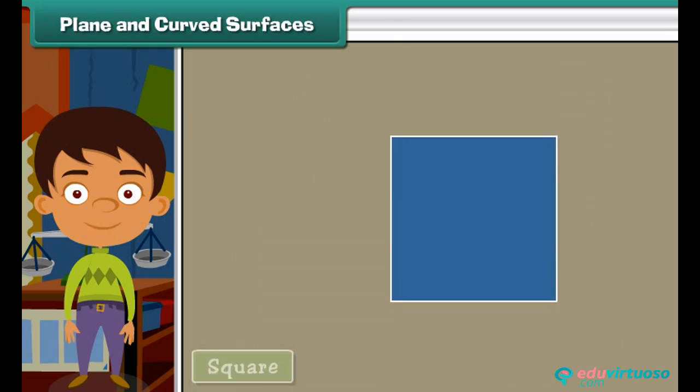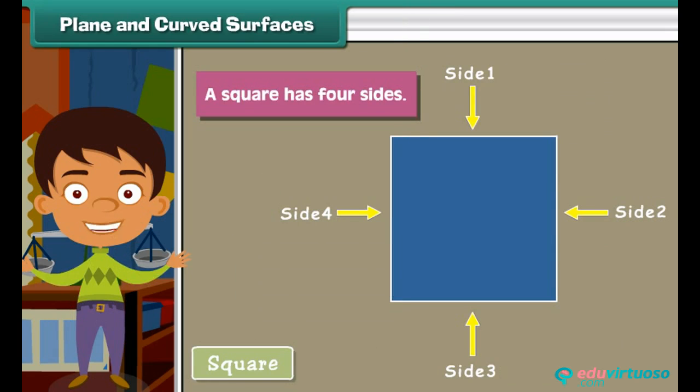Look at this square. Arrows 1, 2, 3, 4 indicate the sides of a square. A square has four sides.